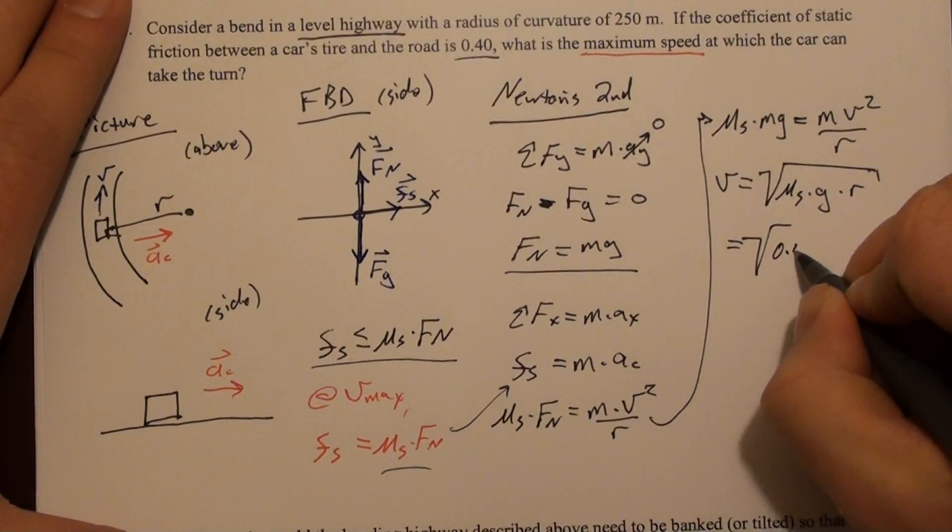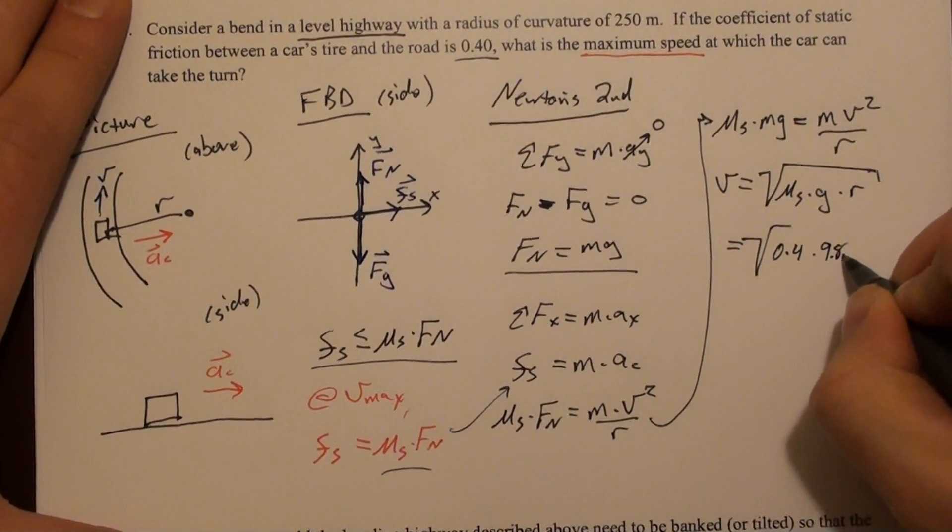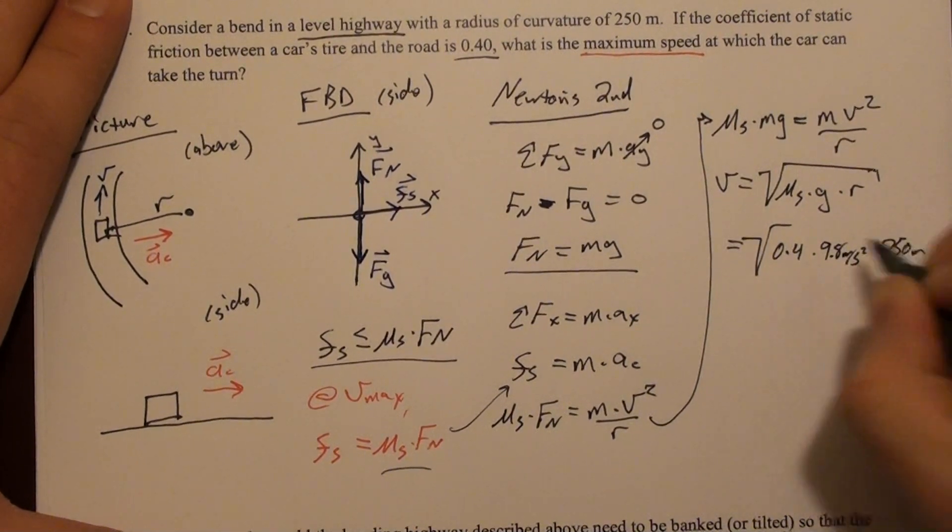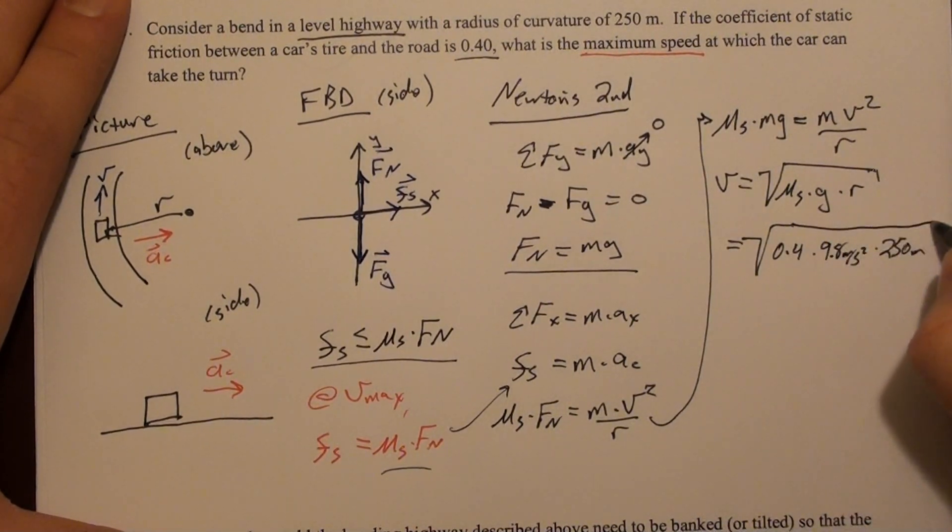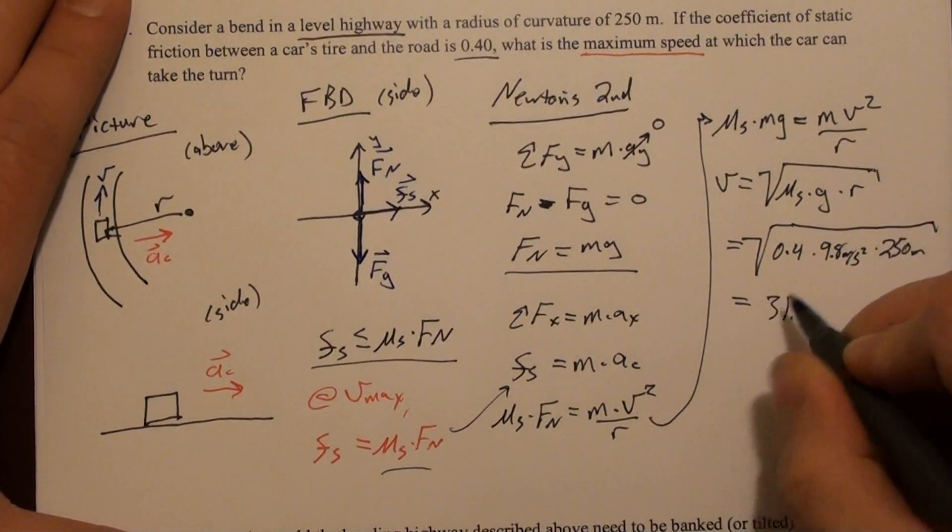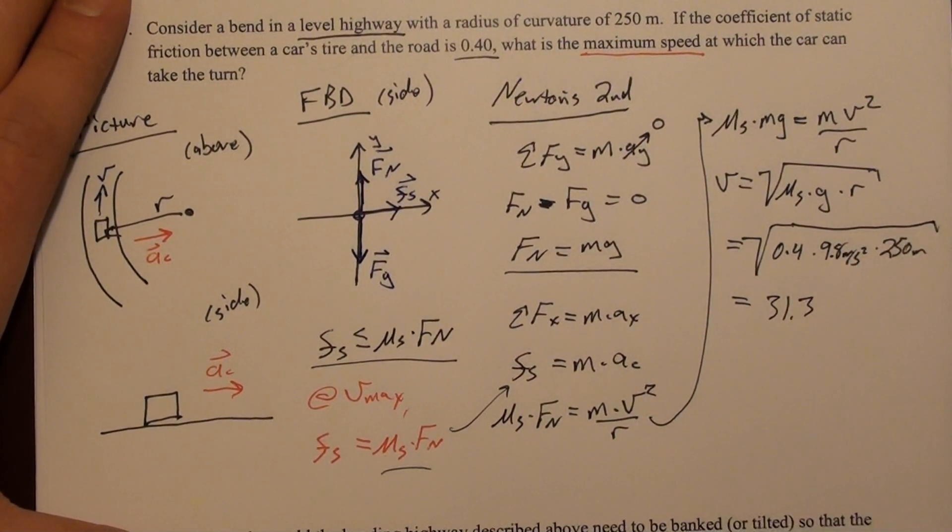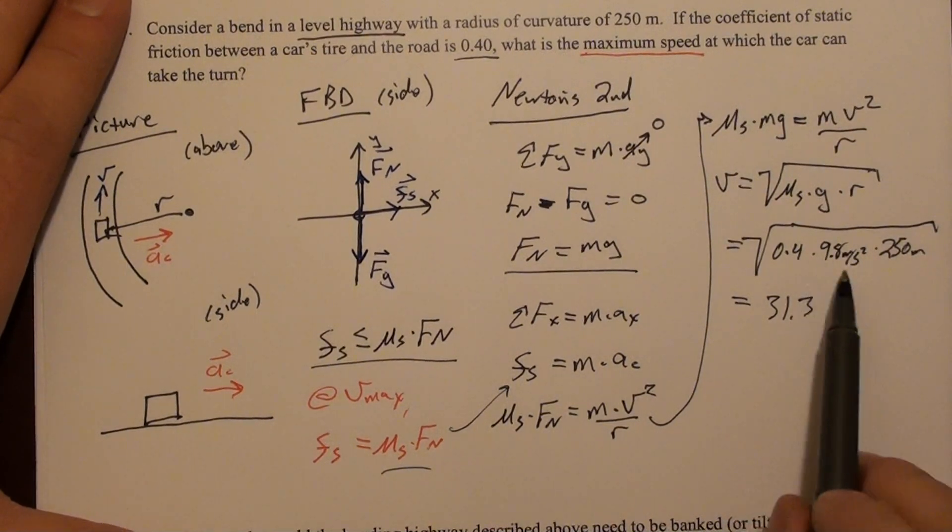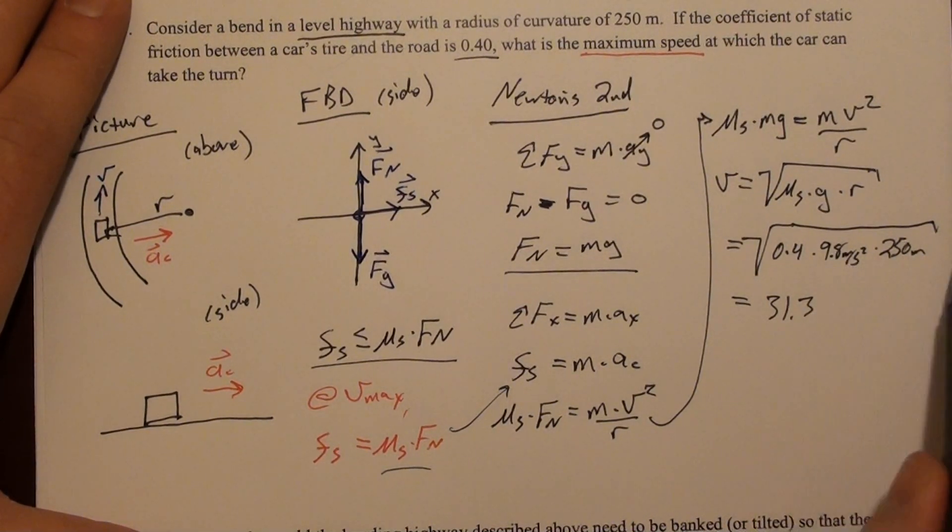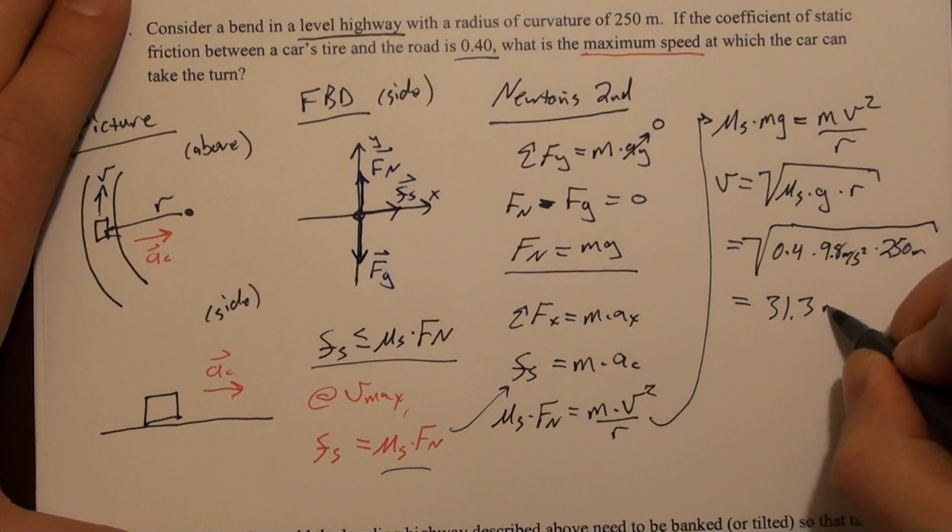We can plug in these numbers. μ_s is 0.4, g is 9.8 meters per second squared, r is 250 meters. We do this math, it gives us 31.3. I have meters times meters—that's meters squared divided by second squared—and I square root it. It gives me meters per second.